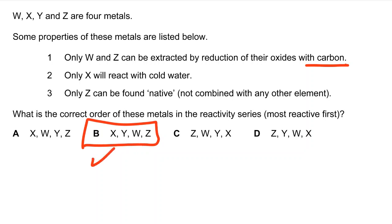X is the most reactive. W and Z are located at the bottom of the reactivity series, with Z being the least reactive because it can be found native. The problem is with Y — most students chose A, which is wrong. Since X reacts with cold water making it the most reactive, and nothing is mentioned about Y, Y's reactivity comes after X. This question is a little bit confusing for candidates.